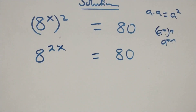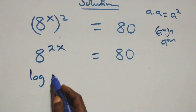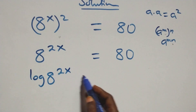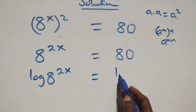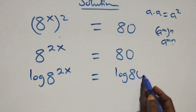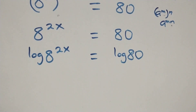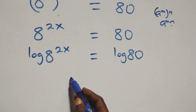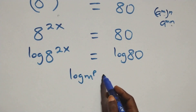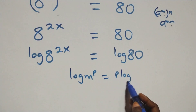The next step: we take the log on both sides. At least here we have log of 8 raised to power 2x equals log 80 on this side. Then we apply the power rule of logarithms, where log of m raised to power p is the same thing as p times log m.